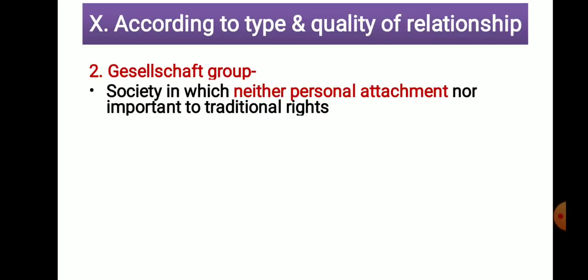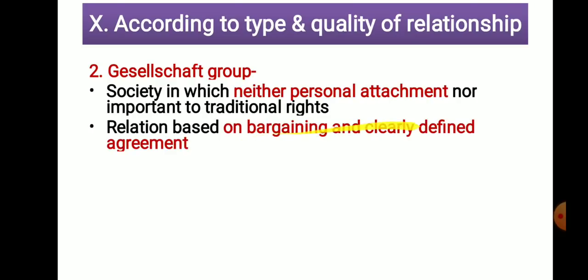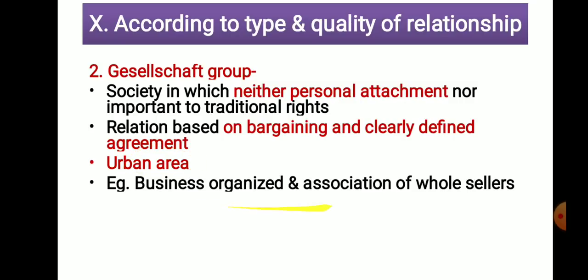In contrast, the second type — Gesellschaft (referred to as 'justice act') — says that neither personal attachment nor traditional rights are important. Relationships are based on bargaining and clearly defined agreements. For example, in a bank, even if the manager is your brother, he will not offer you a loan based on personal relationship. He will ask for documents, and the loan is sanctioned according to those documents. This is mostly observed in urban areas, business organizations, associations of wholesalers, and banks — all carried out based on clearly defined agreements.